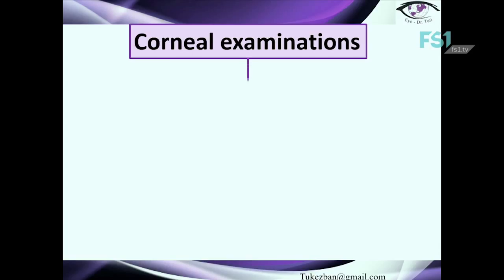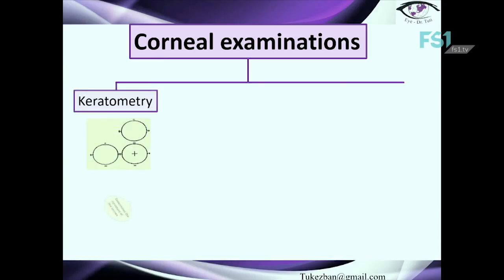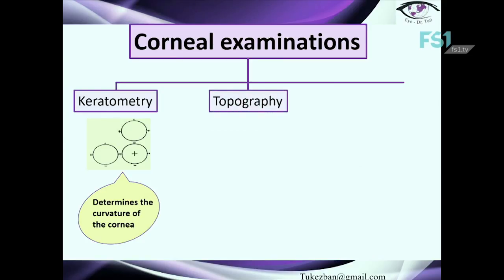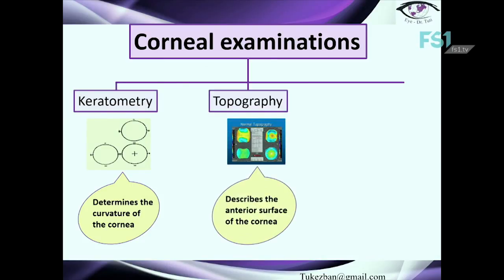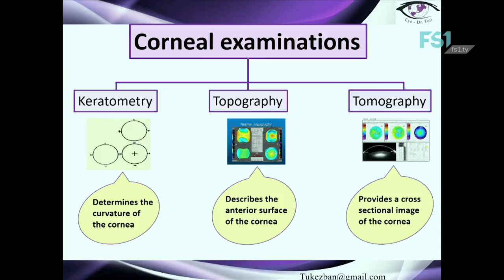The next examinations are keratometry, which provides information about the curvature and keratometry power of the cornea. Another important examination is topography, which describes the anterior surface of the cornea. And the next is tomography, which provides a cross-sectional image of the cornea.